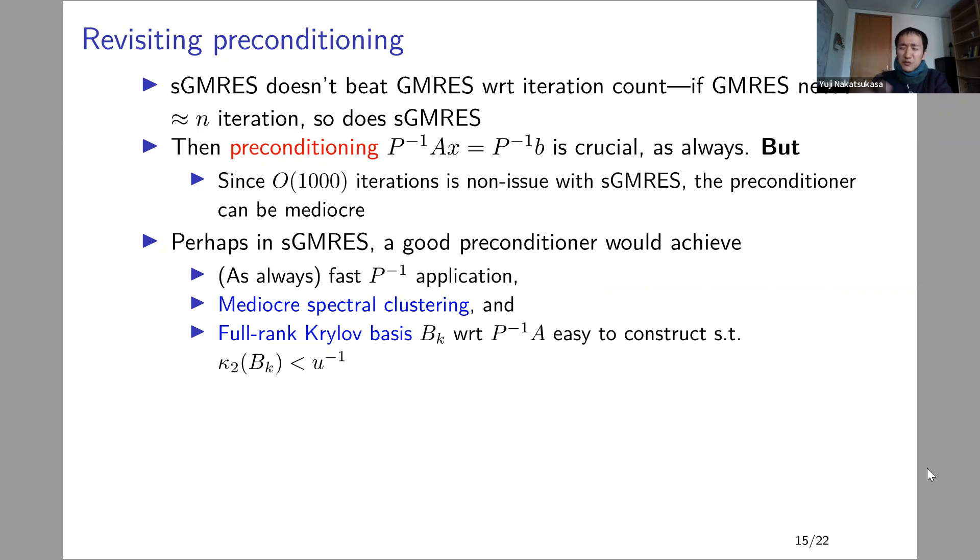Another thing I'd like to mention, maybe briefly for this audience, is the notion of preconditioning, which is usually trying to cluster the eigenvalues or singular values. Maybe this gives us an incentive to reconsider preconditioning, because we don't really need the preconditioner to do such a great job that we will need only tens of GMRES iterations. We're very happy to do thousands of GMRES iterations, as we saw in the experience. So maybe this gives a new way of looking at preconditioning. Maybe a mediocre preconditioner will be good enough in light of sketch GMRES.